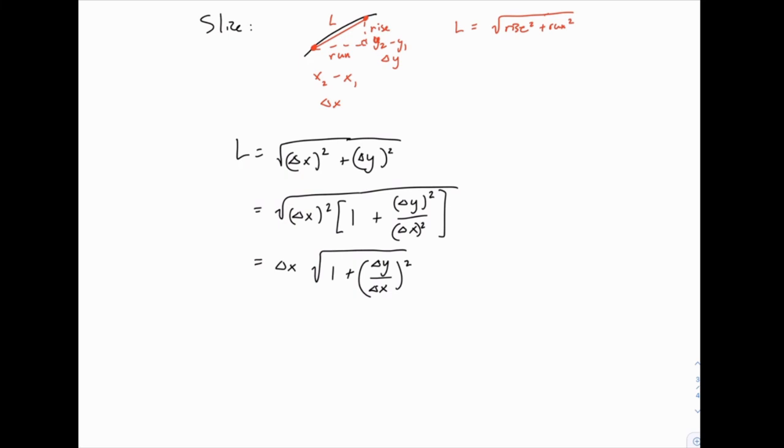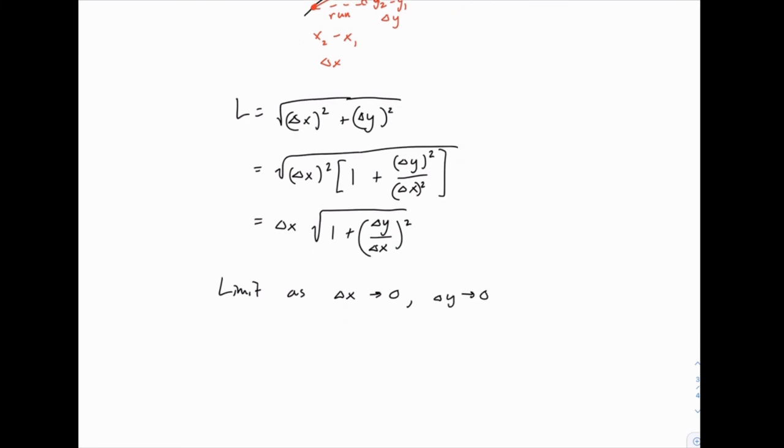Now, imagine making this line segment smaller and smaller and smaller, shorter and shorter. So we take the limit as delta x and delta y go to zero. That's what happens as we make this line segment infinitesimally shorter. So this turns into the square root of 1 plus dy over dx squared, and then dx on the outside.